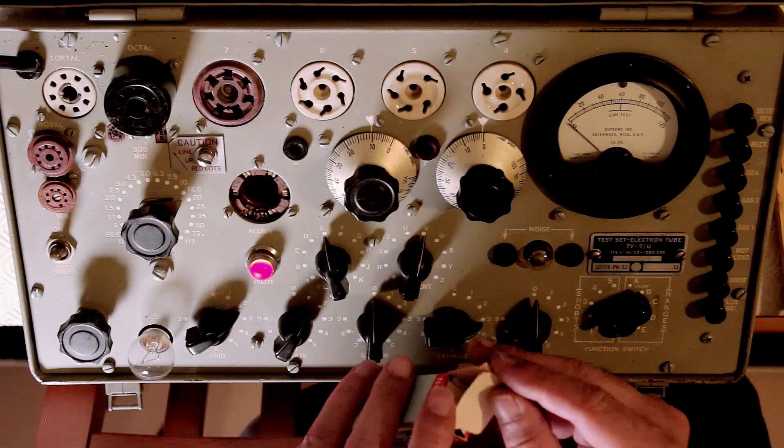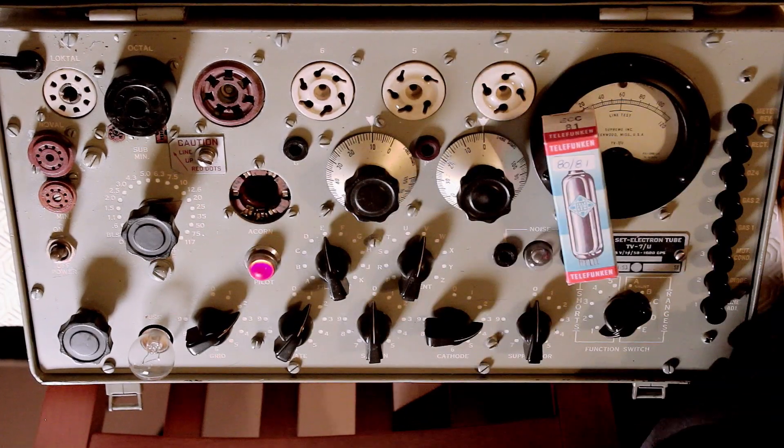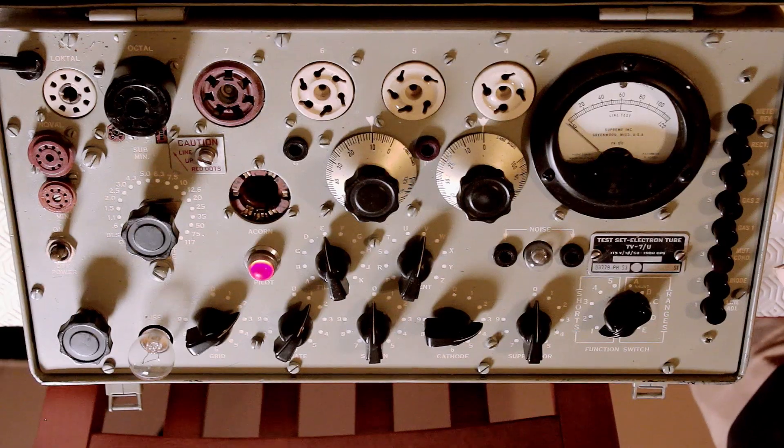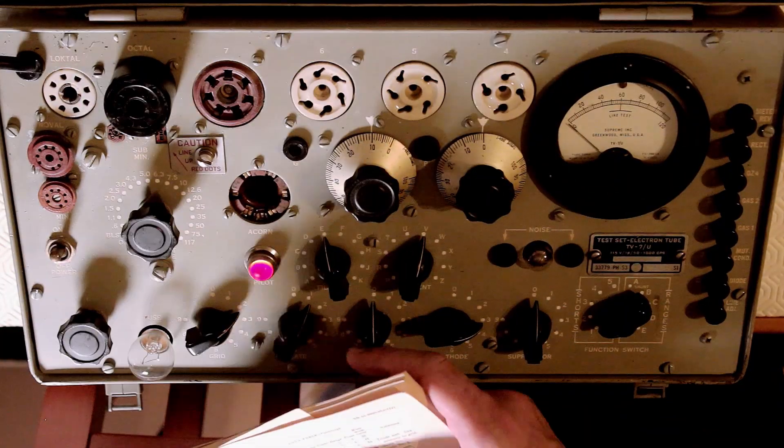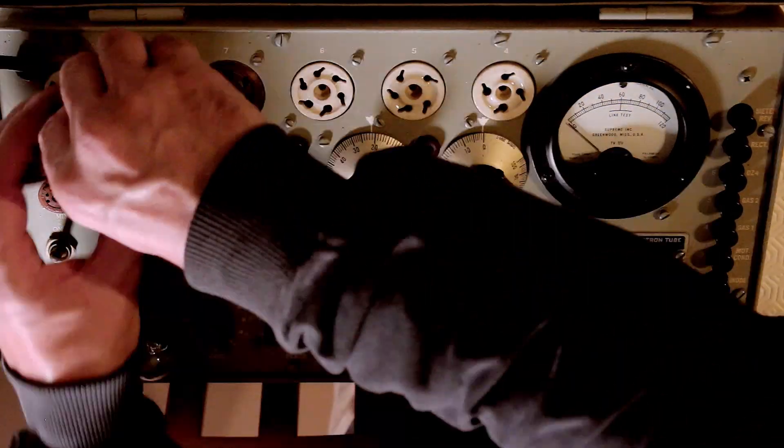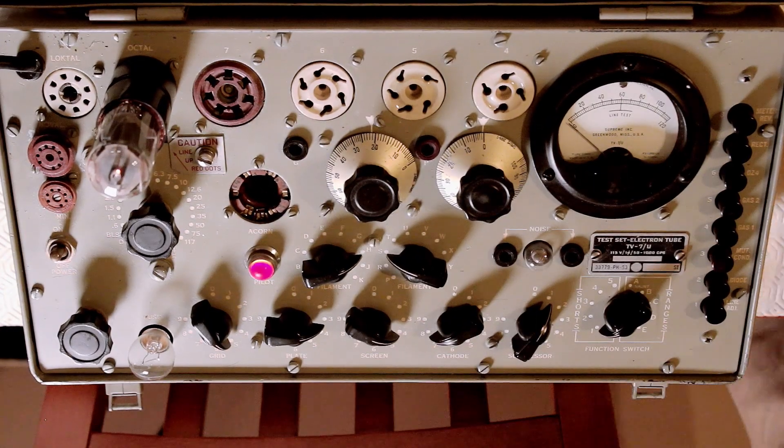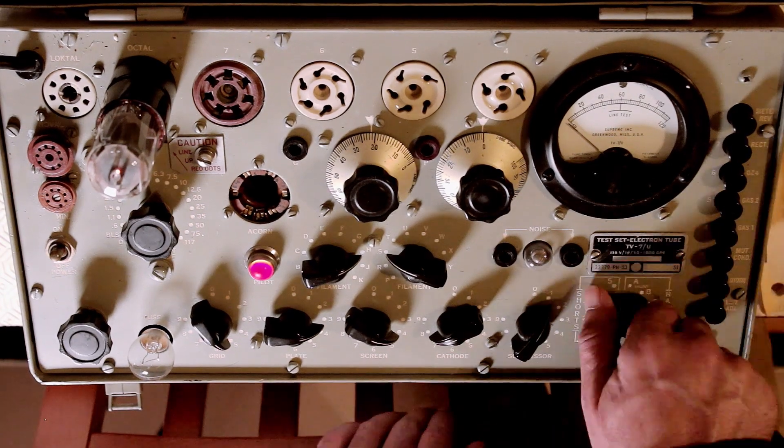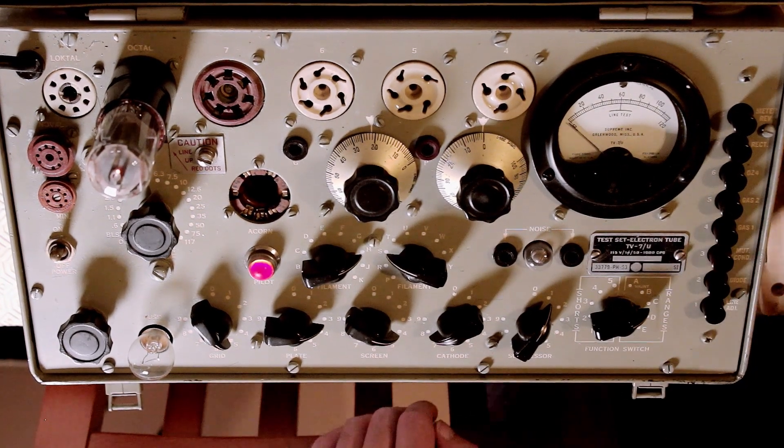Now with a power tube, a 6V6 GT from a guitar amplifier. The process is the same. You follow the procedure in the manual to get the settings for the machine so you can get proper readings.